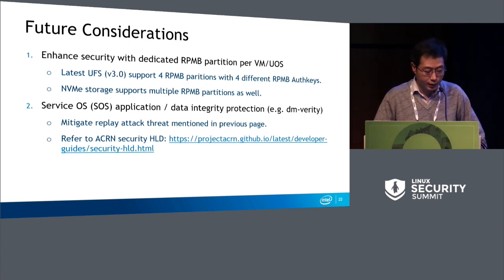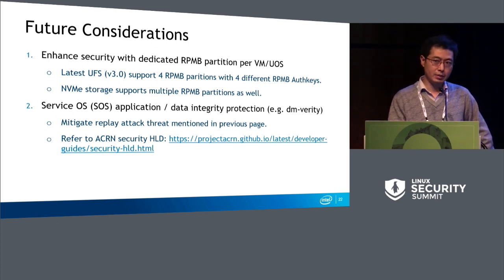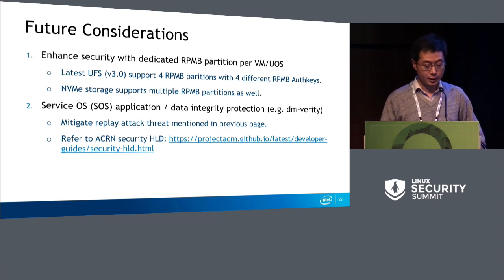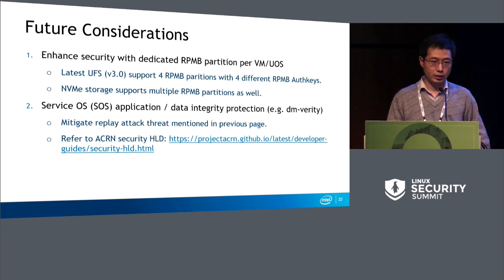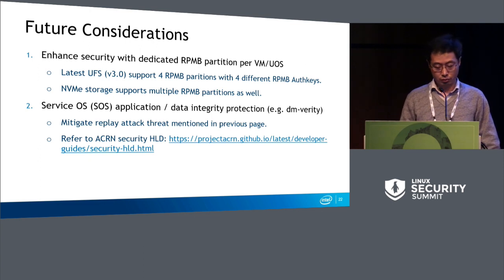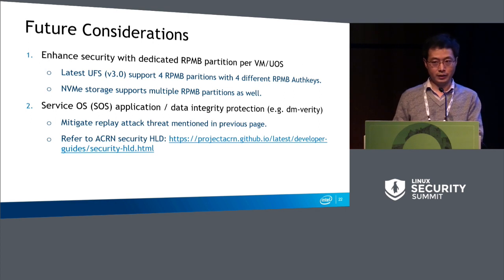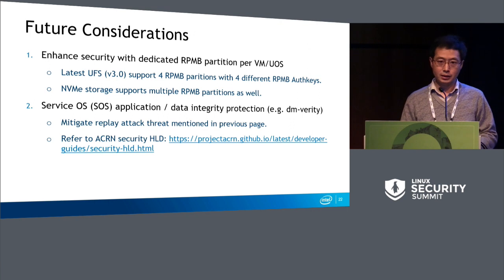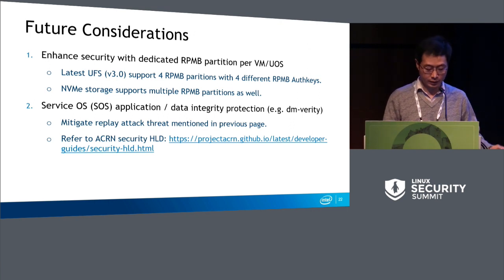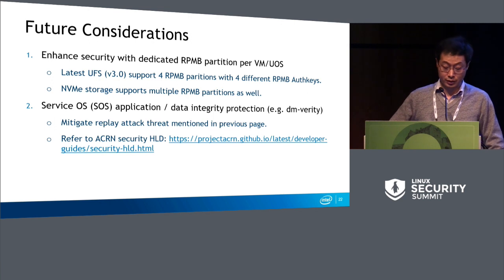For future considerations: as I previously mentioned, the latest UFS 3.0 supports a maximum of four RPMB partitions, which means those four partitions can be programmed with four different authentication keys. If we take this into consideration for building virtualization on the hypervisor, we can assign each virtual Android a dedicated physical RPMB partition. In that case, we can prevent RPMB replay attacks as previously mentioned. We also need to do enhancement for Service OS integrity protection.